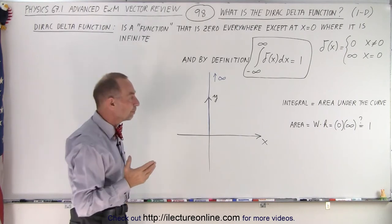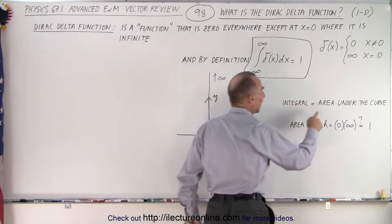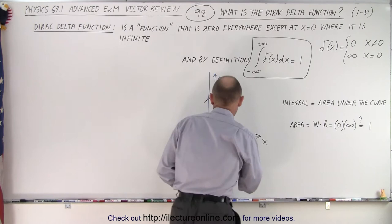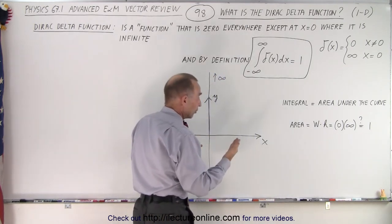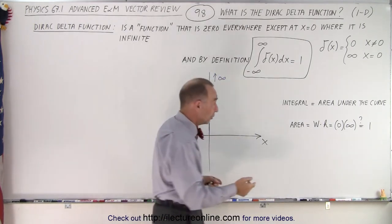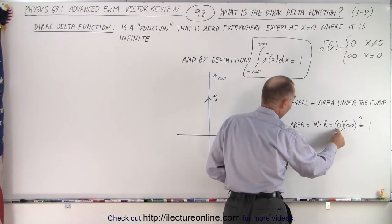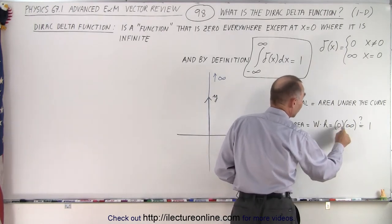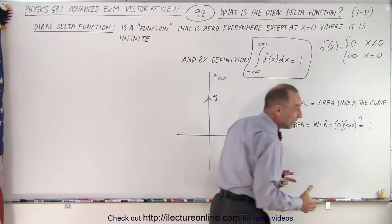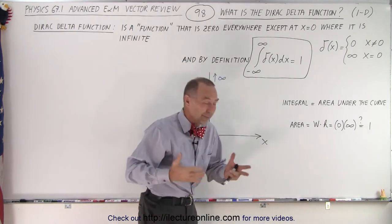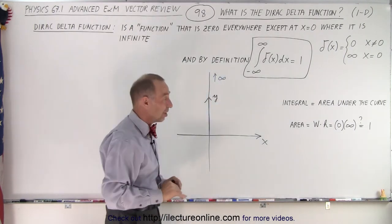If we think about an integral, we know it equals the area under the curve. The area equals width times height. This has zero width and infinite height, and somehow that product should equal 1. In traditional mathematics, that doesn't make any sense at all.